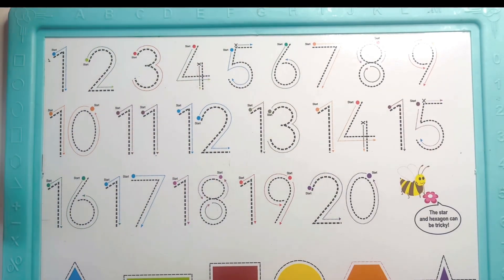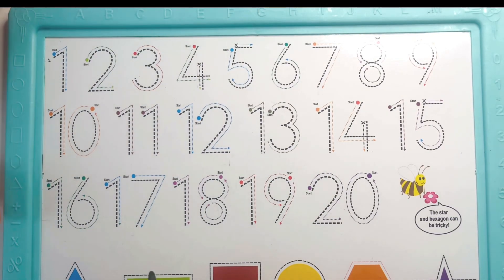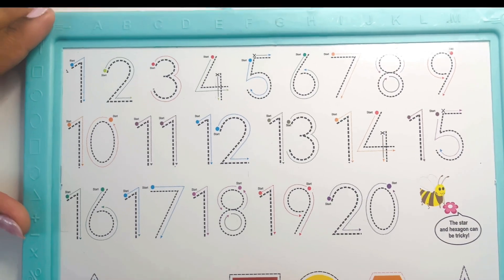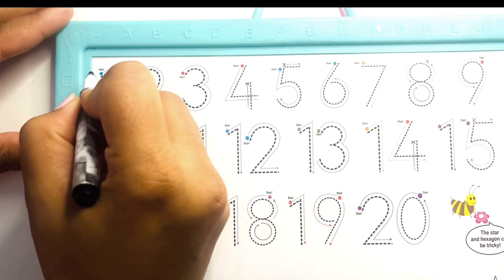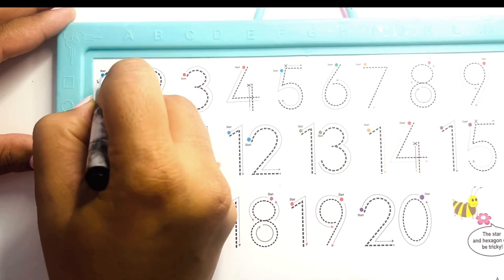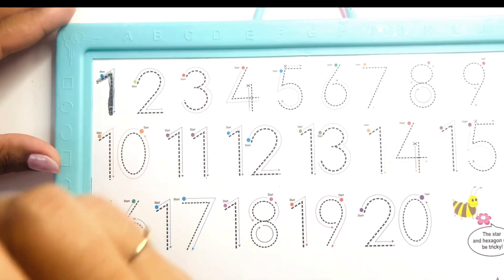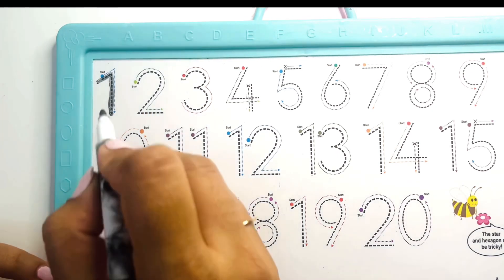Hello kids, let's learn numbers. How can we write these numbers? How we can write? Connect these dots. Number one, now start from here and come till here. Okay, start here.